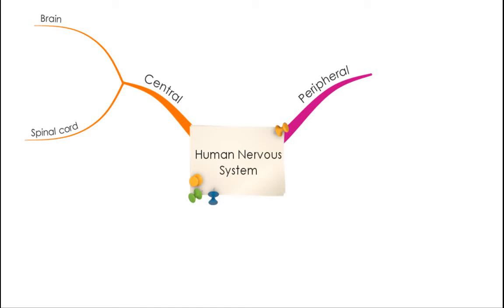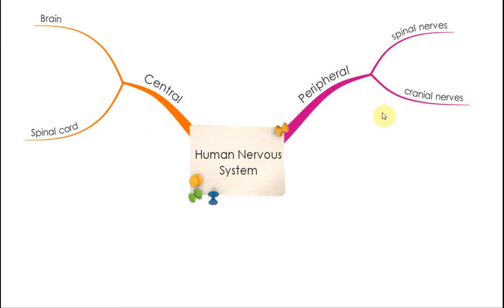There are two types of peripheral nerve. The spinal nerves are the nerves that branch out from the spinal cord, and we have cranial nerves which are the nerves that come out from the brain.